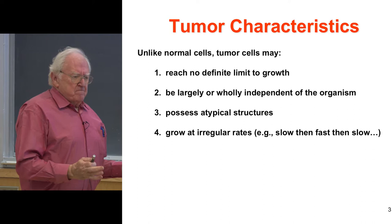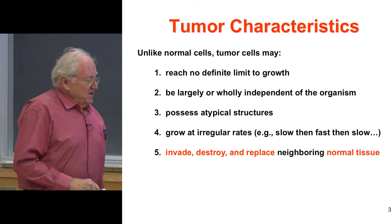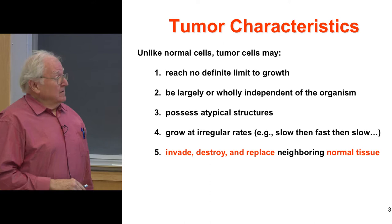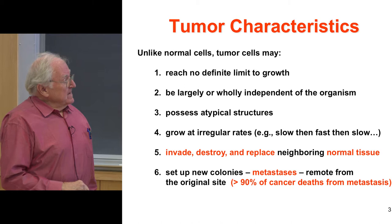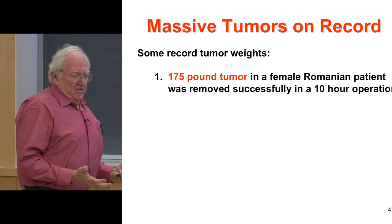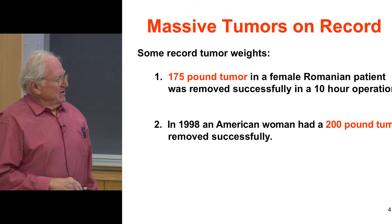What normally kills you is the invasion of normal tissues and the spread — metastases away from the original tumor. Here are some very large tumors that affected people, but obviously didn't kill them because they did not affect the vital organs. The record is a 300-pound tumor on a person.